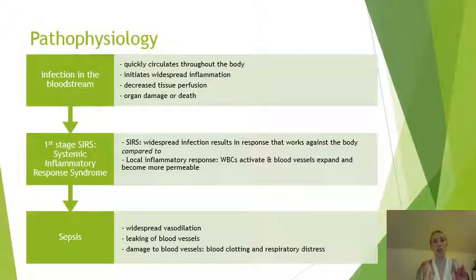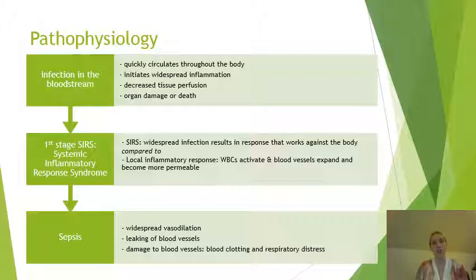Looking at the pathophysiology of sepsis — we know that sepsis is an infection in the bloodstream, but why is it so severe? The infection in the blood quickly circulates throughout the body and initiates widespread inflammation and decreased tissue perfusion that can lead to organ damage or death. This begins with an infective agent in the blood — bacteria, virus, fungi, or parasite — most commonly gram-positive bacteria.